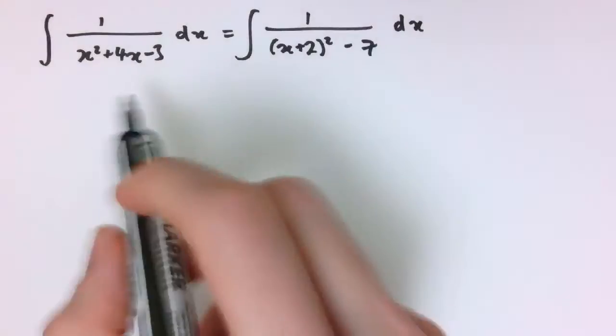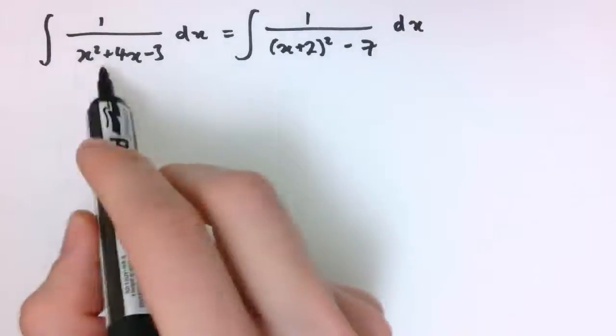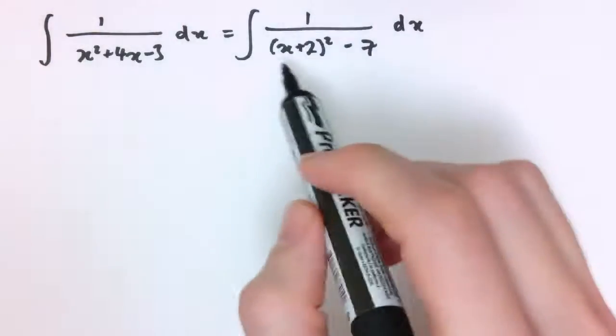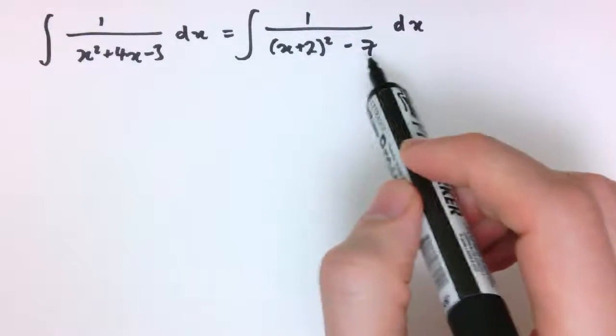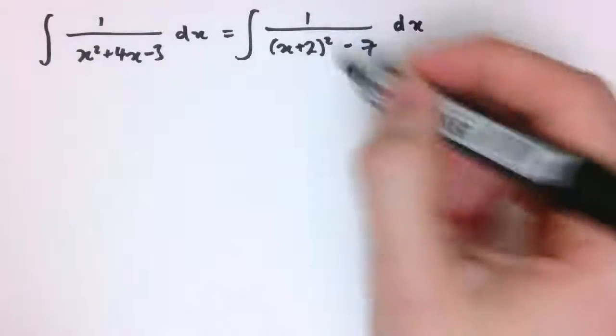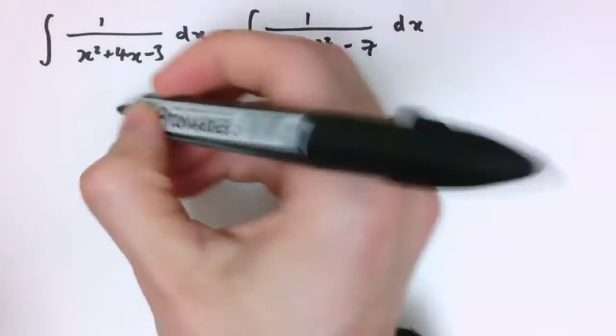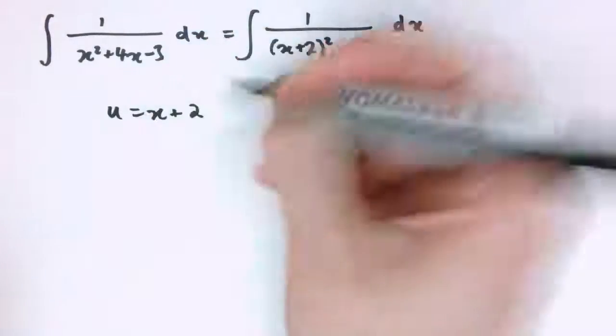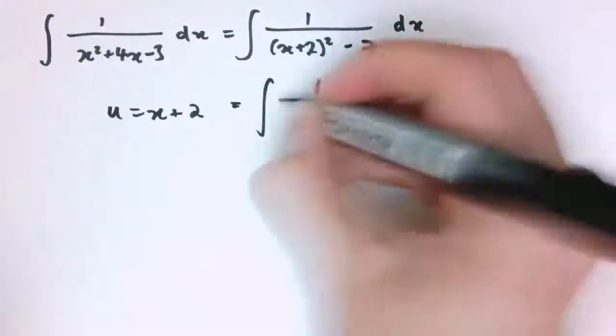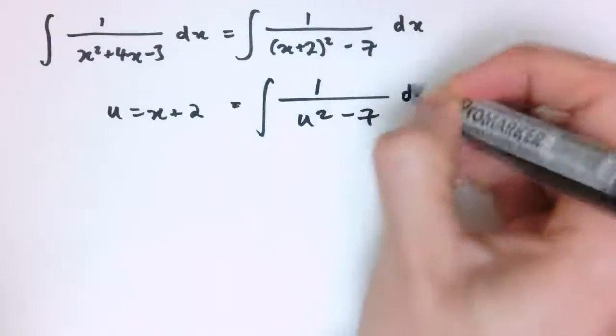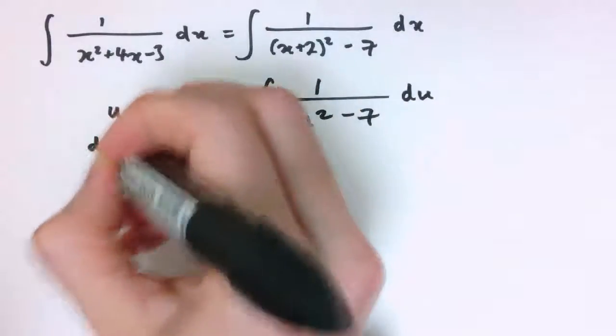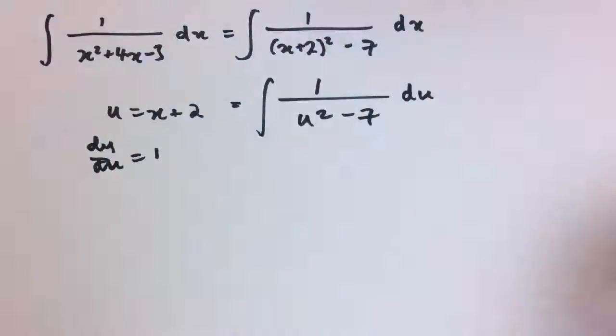So what else can happen? Well, if I complete the square here, 1 over x squared plus 4x minus 3, I get 1 over x plus 2 squared minus 7, so it's not quite the same form, so I've got a minus here instead of a plus. But we can do the same sort of thing, so if I let u equals x plus 2 here, then I get 1 over u squared minus 7 du, because du by dx equals 1, we don't have to worry about the conversion factor.